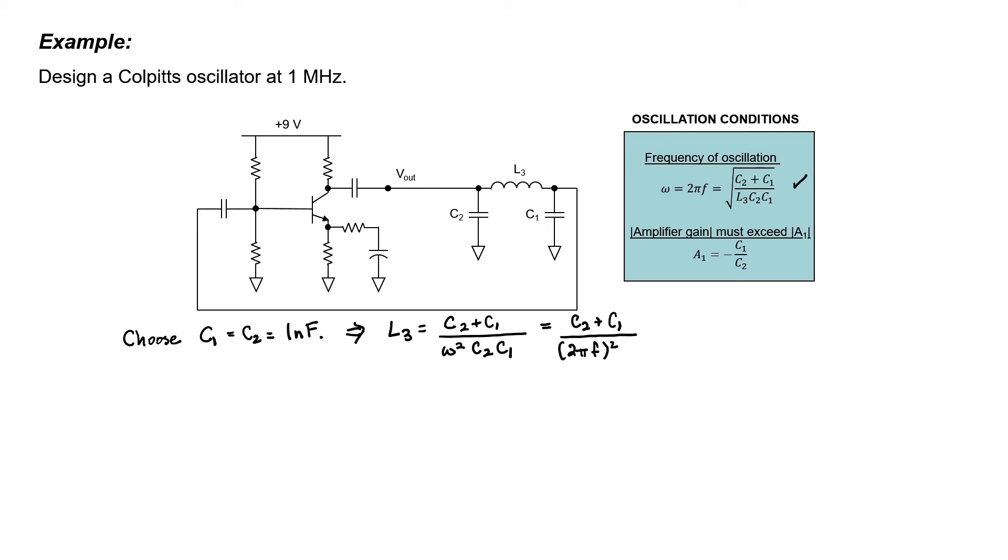If I substitute in 1 nF for each capacitor and 1 MHz for the frequency F, we calculate a value for the inductor of 50.66 mH. That's a non-standard inductor value, so I plan to actually use an inductor of 47 mH when I actually build the circuit.